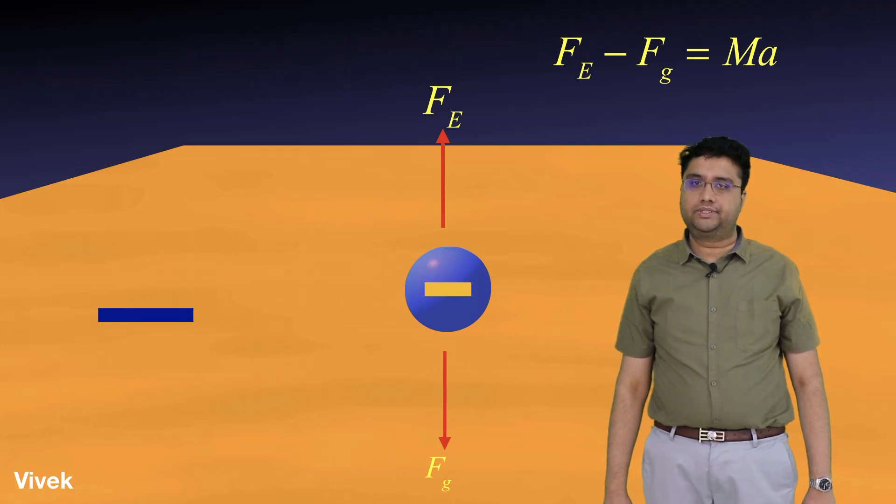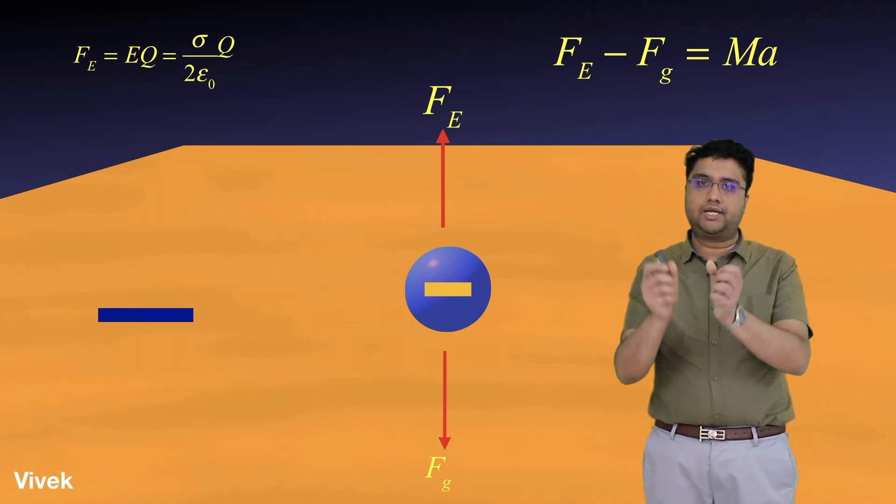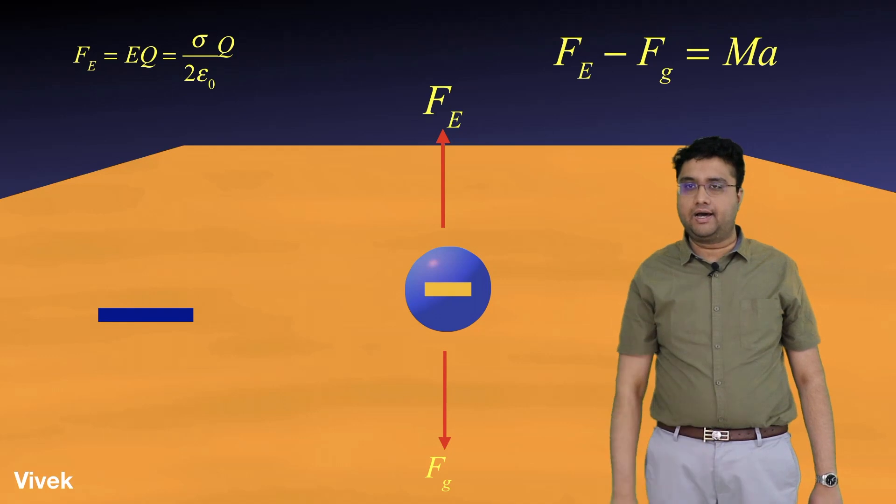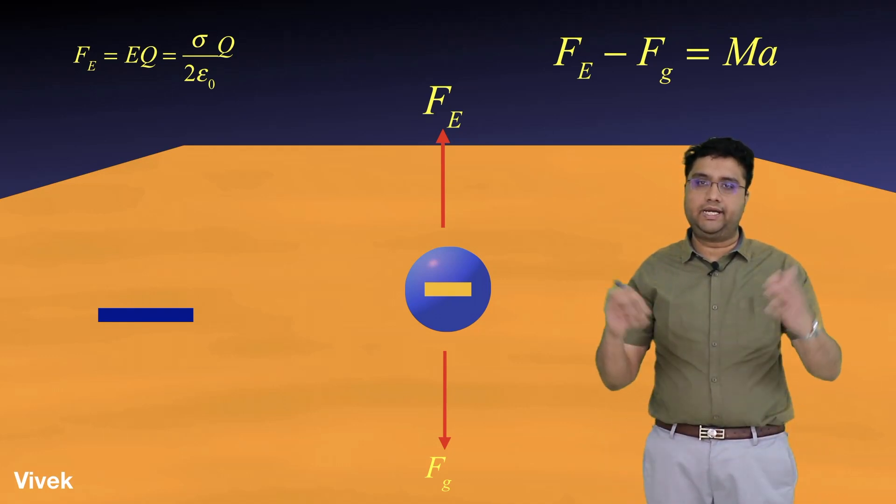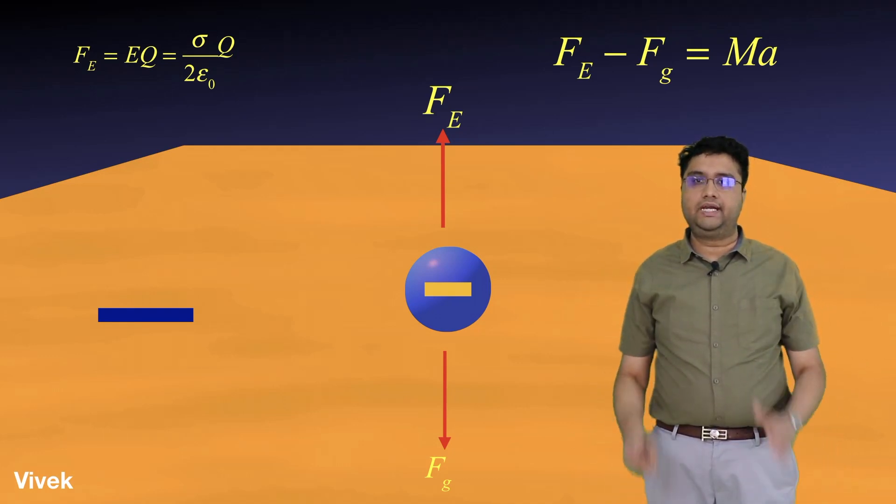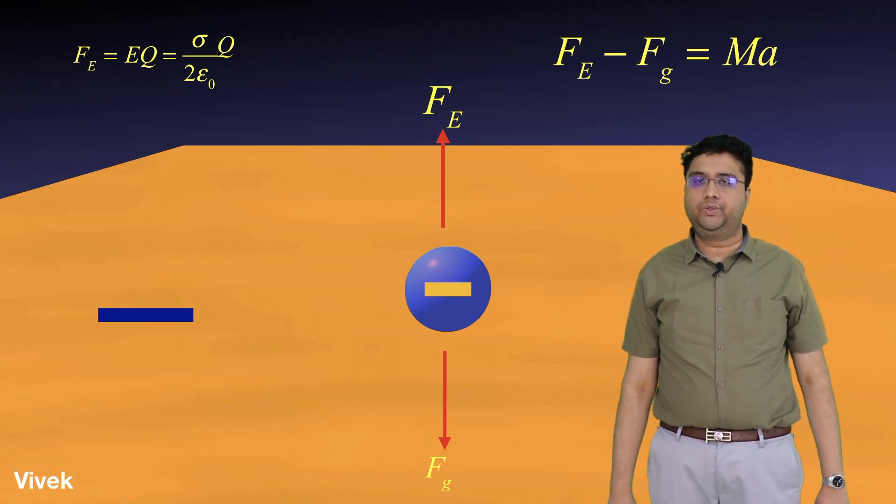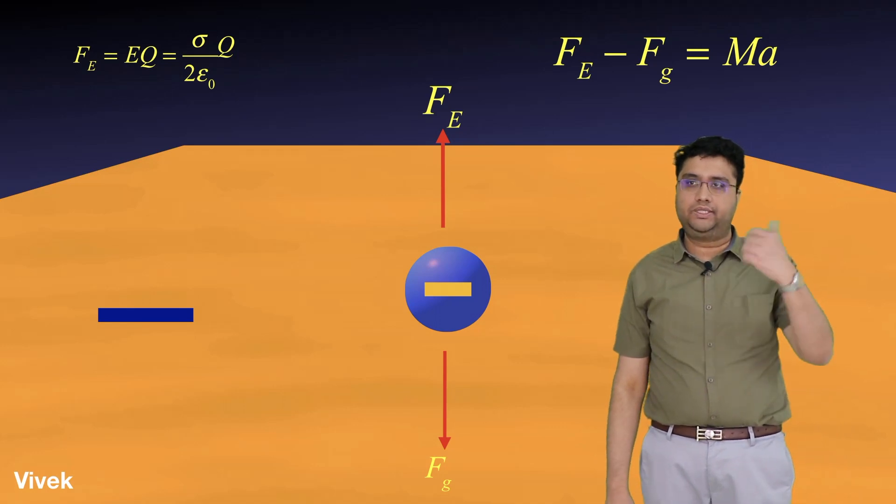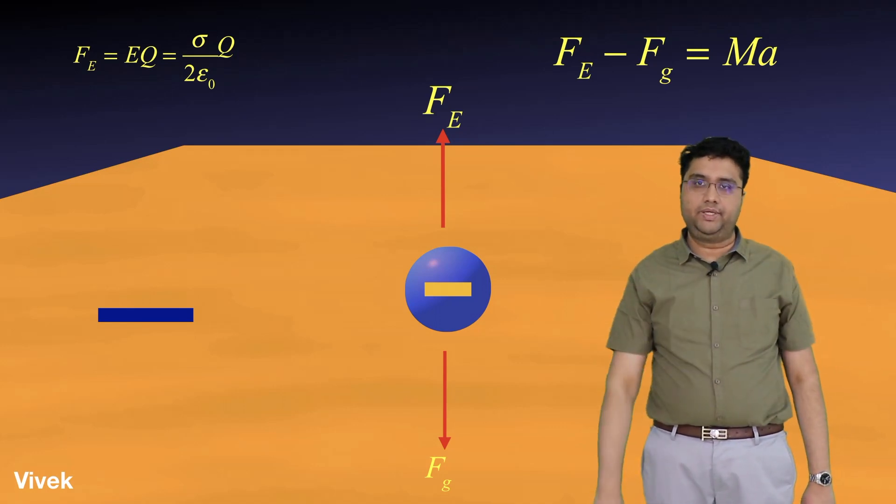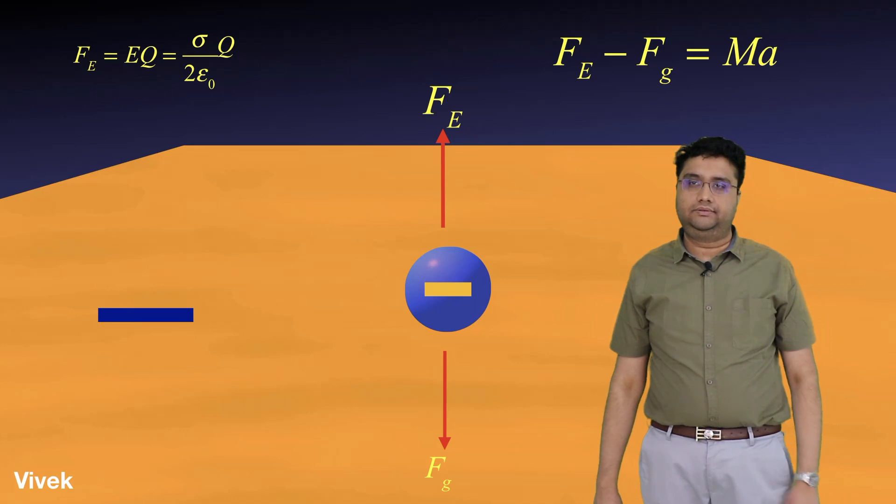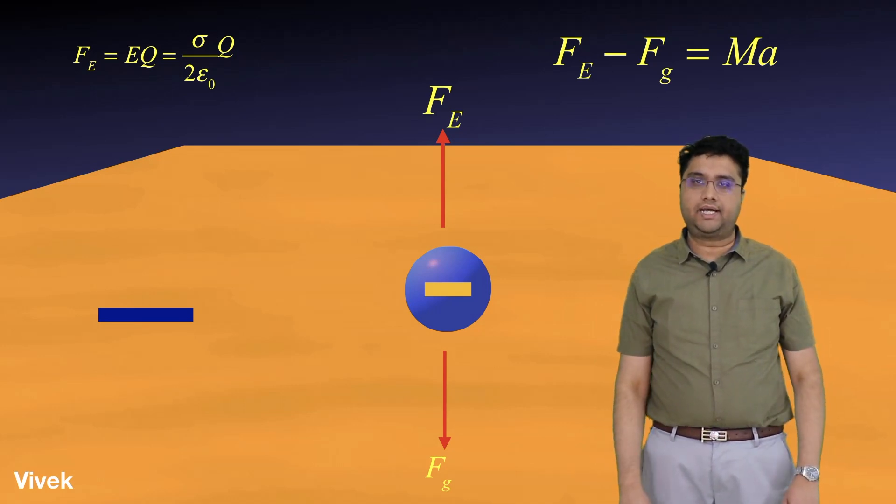But what is electric force? Electric field into the charge. But here the plane is very large, so it can be assumed to be an infinitely large plane. For an infinitely large plane that is uniformly charged, the electric field at any point is sigma by 2 epsilon naught. That we have shown in the previous video.